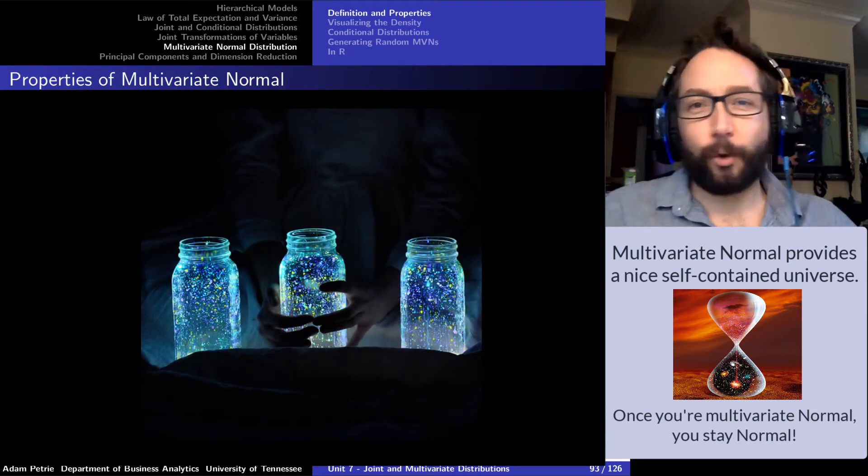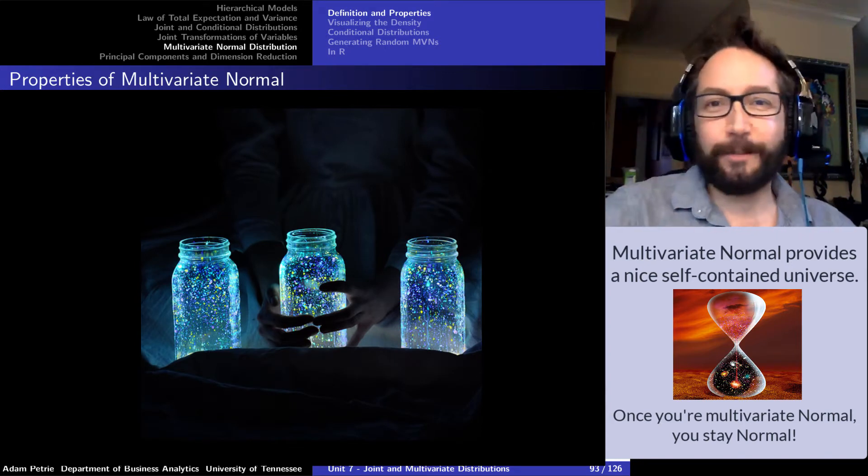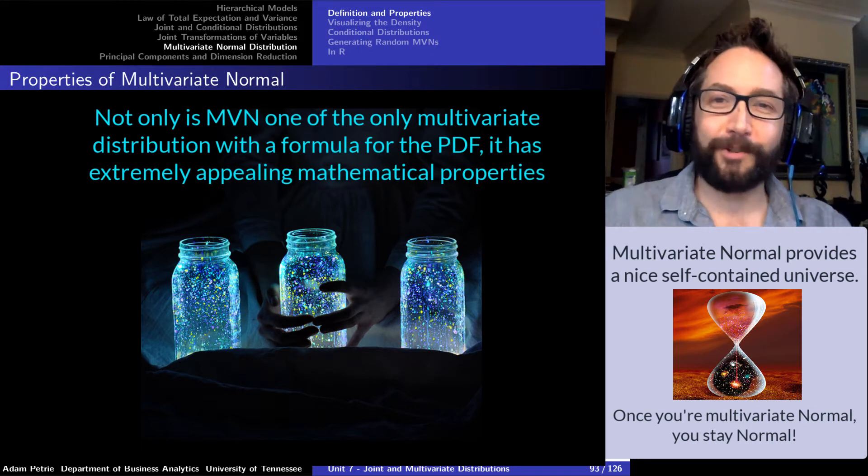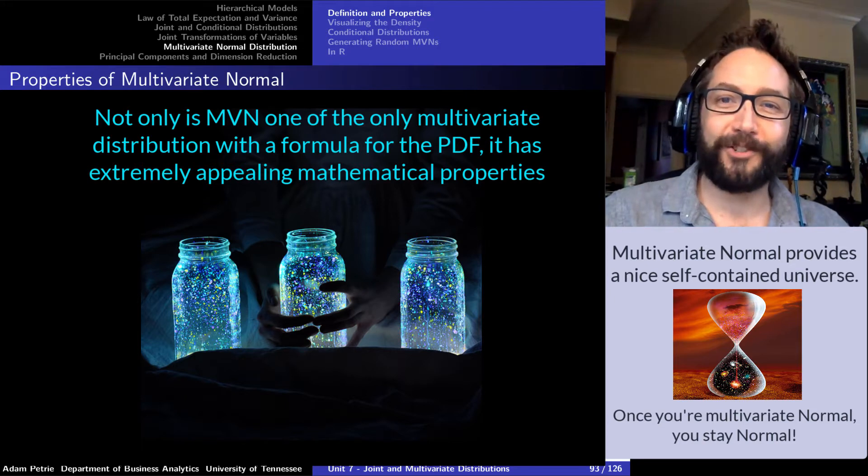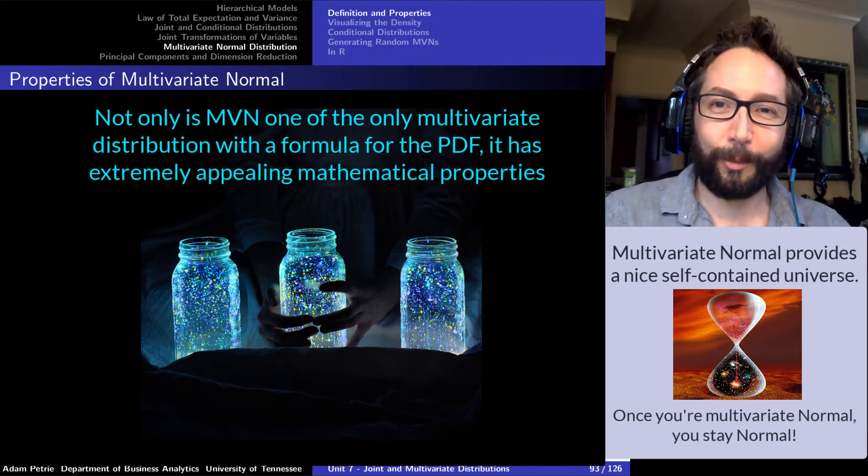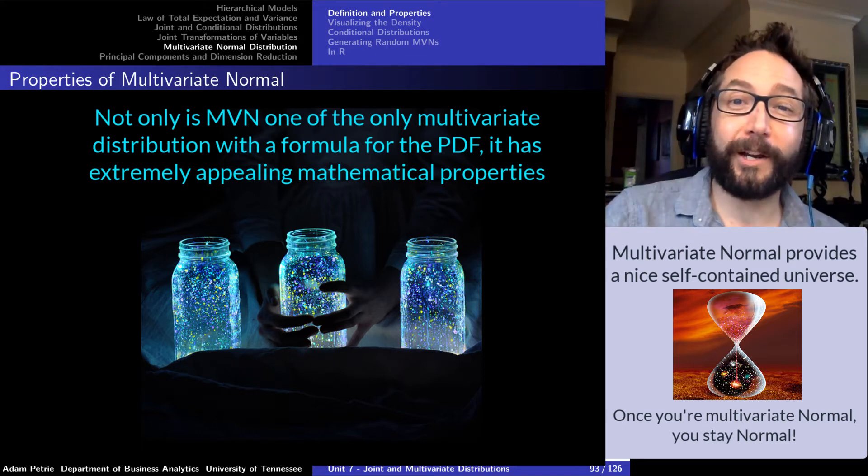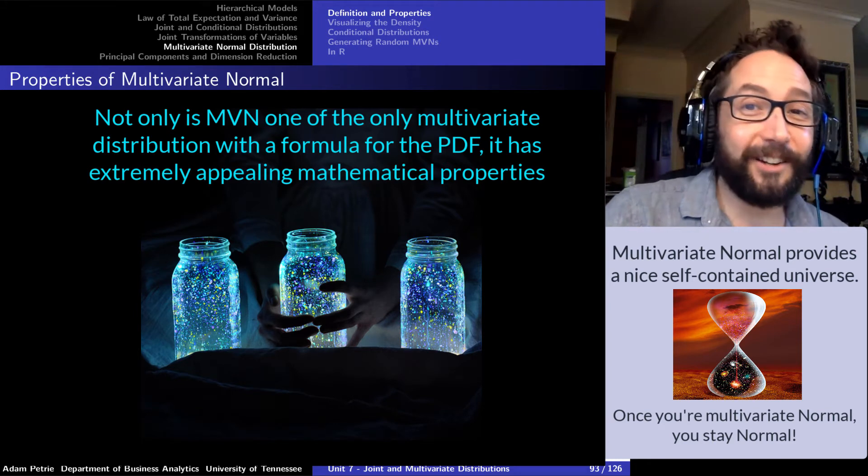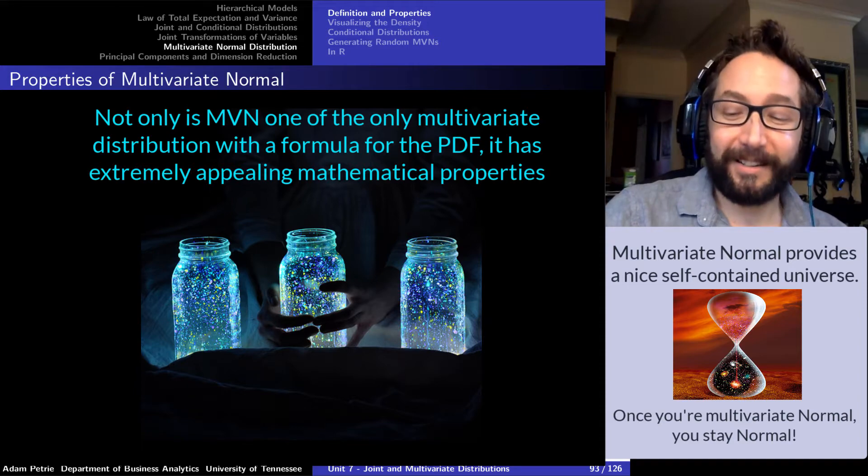And so this multivariate normal distribution is like this whole self-contained world. Once we're in this multivariate normal world, pretty much everything that we're curious about, distributions of combinations of other quantities, marginal distributions, conditional distributions, it's still going to be normal. Once we're in that normal world, we stay in that normal world, very, very convenient for working with. And you can see why really the multivariate normal distribution is our only notorious distribution in the multivariate zoo here.